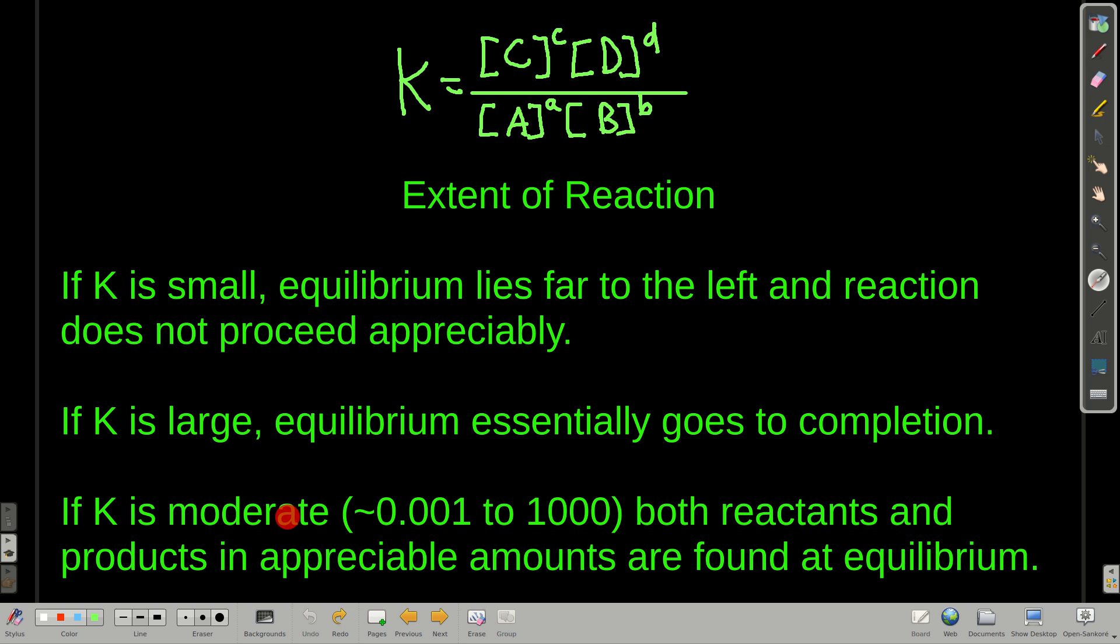However, if K is moderate, so how do you define moderate? Well, let's just say as a rule of thumb between 0.001 and 1000, somewhere 1×10⁻³ to 1×10³. In that case, we're going to say K is moderate enough to where at equilibrium, there's going to be an appreciable amount of products and reactants around.